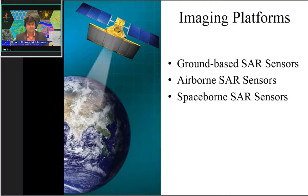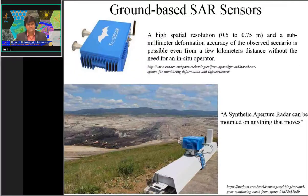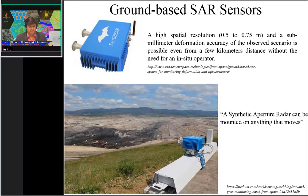The first example is the ground-based SAR sensor, also named GBSAR. With a ground-based SAR system, it is easy to generate very high spatial resolution datasets. One example is the fast ground-based synthetic aperture radar (fast GBSAR), which can generate 0.5 to 0.75 meter spatial resolution.